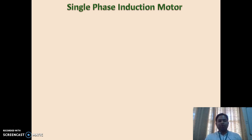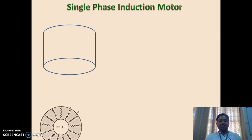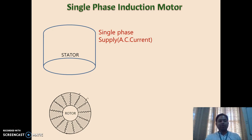We know that single phase induction motor works on single phase supply. When single phase supply is given to the single phase induction motor, the induction motor is basically an AC motor. It is having two main parts — stator and rotor. The stator is called the stationary part or input part, and the rotor is called the output part or rotating part.